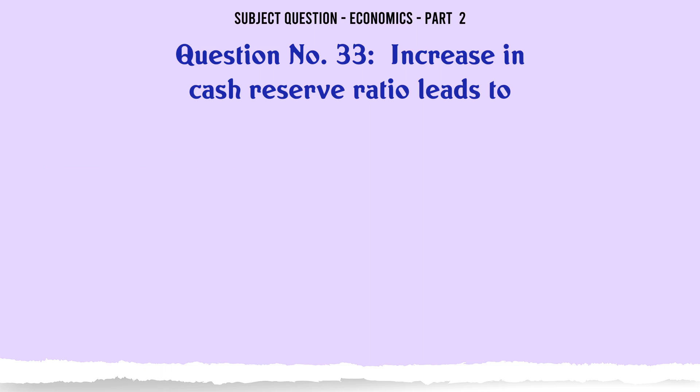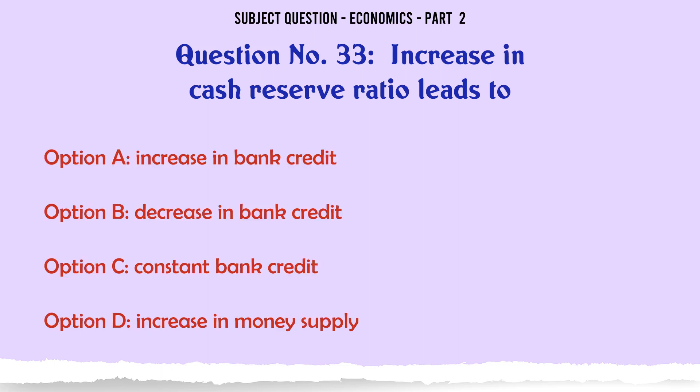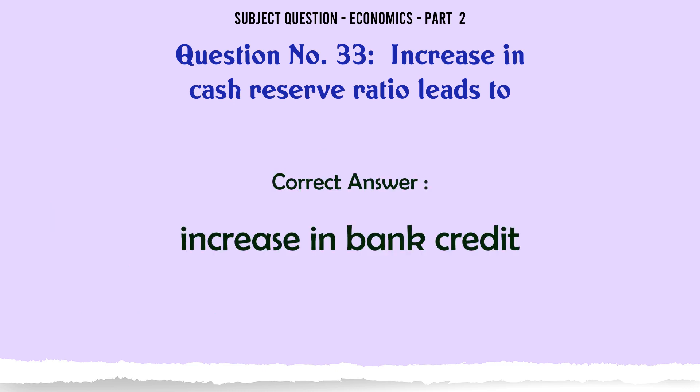Increase in cash reserve ratio leads to: A. Increase in bank credit. B. Decrease in bank credit. C. Constant bank credit. D. Increase in money supply. The correct answer is: Increase in bank credit.